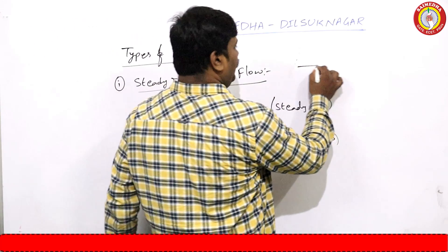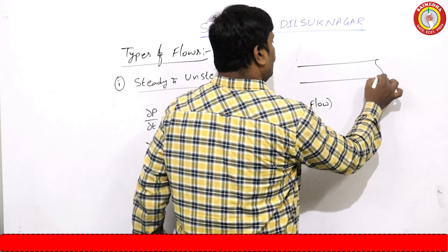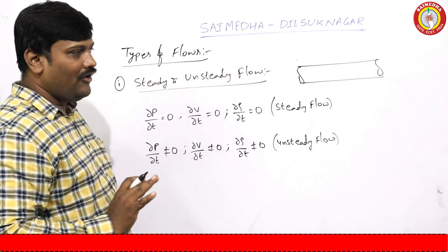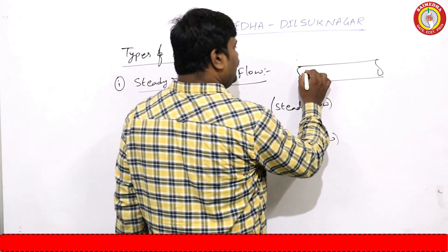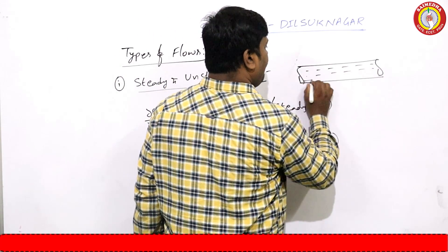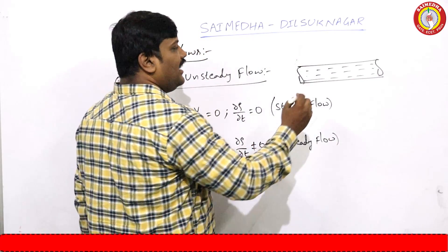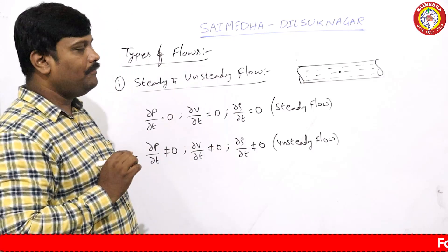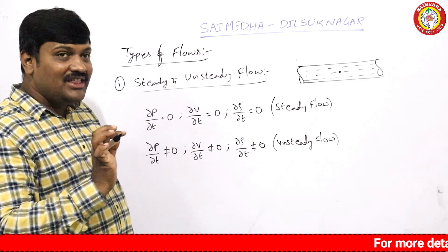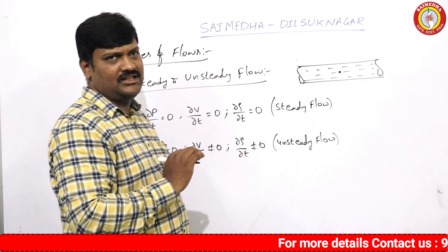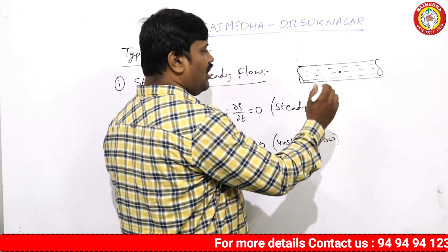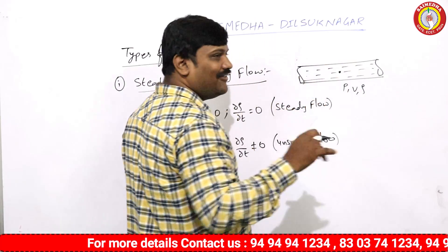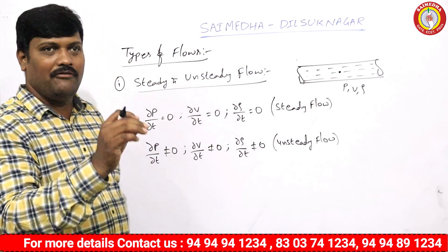See, if we take any pipe — let us take there is a pipe, and in this pipe some fluid is flowing. In this fluid if we observe, let us take any point in the fluid. With respect to time, now it is 1 o'clock. At 1 o'clock, the pressure is some value, velocity is some value, density is some value at that particular time.